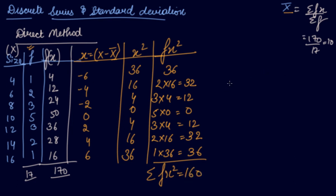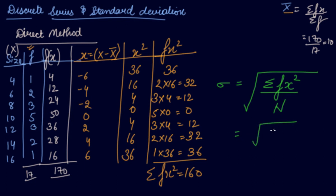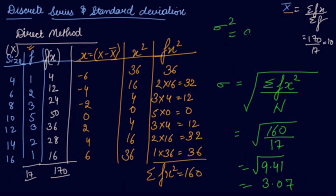Now applying the formula, the standard deviation for discrete series is the same as individual series except we use frequency. So SD = √(Σfx² / Σf) = √(160/17) = √9.41 = 3.07. We can also find the variance, which is 9.41, and the coefficient of variation as (SD / x̄) × 100. The only difference from individual series is multiplying by frequency.